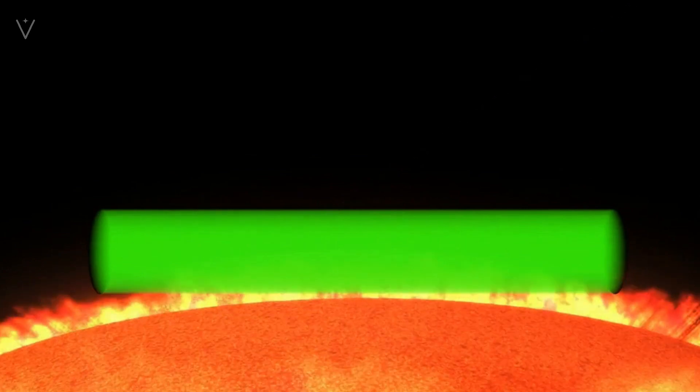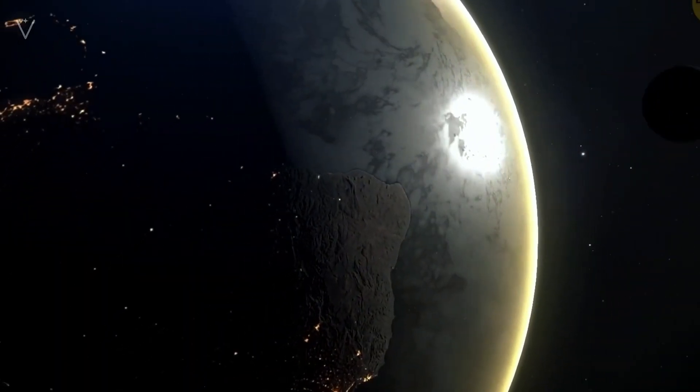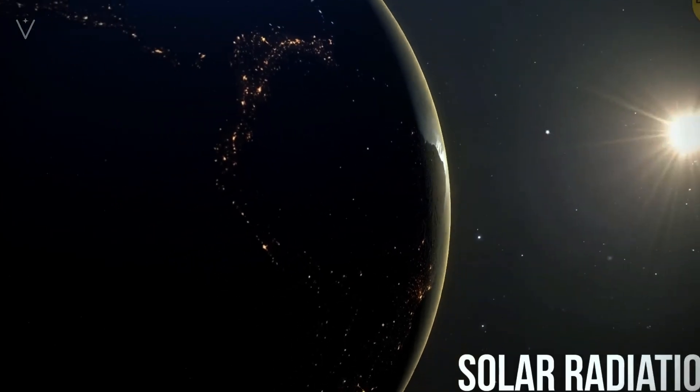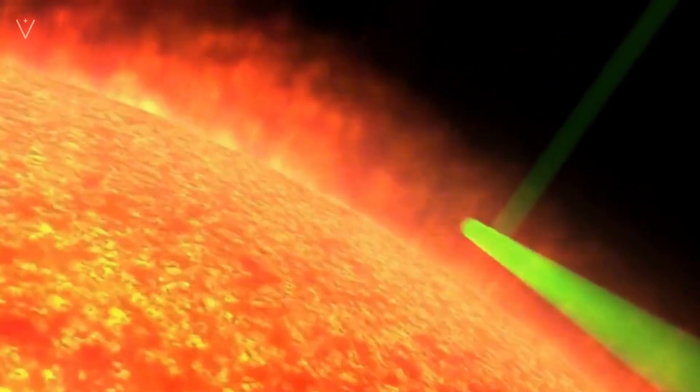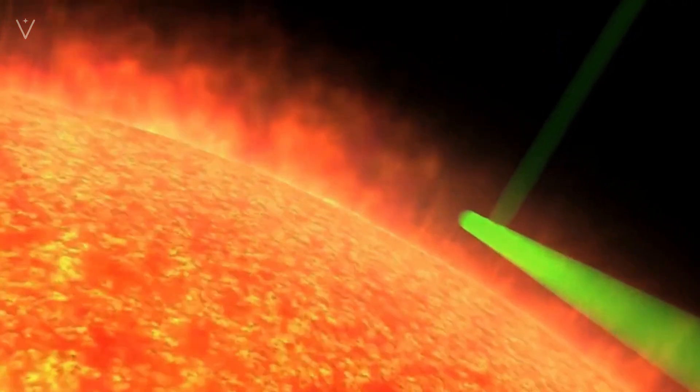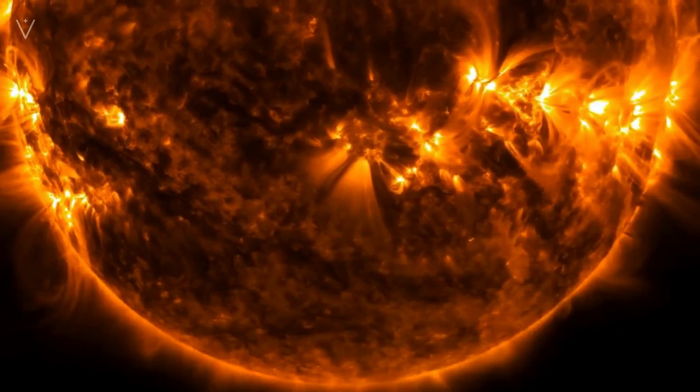Under such rare conditions, the new Sun might undergo a core-collapse supernova at the end of its life, one of the universe's most spectacular and violent events, releasing immense energy and light that could illuminate an entire galaxy and profoundly impact the surrounding space.